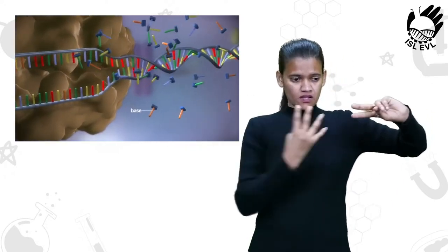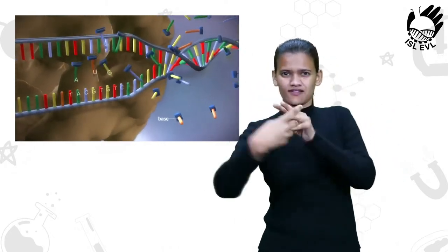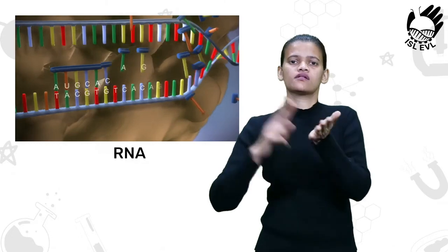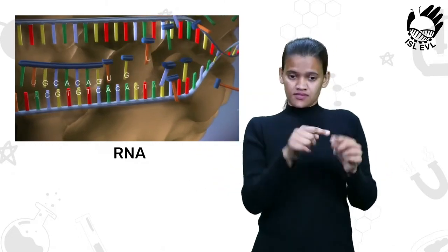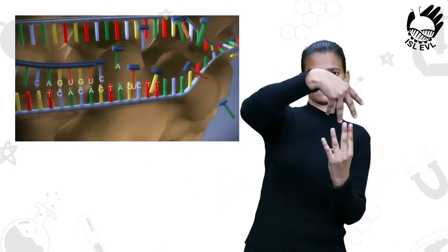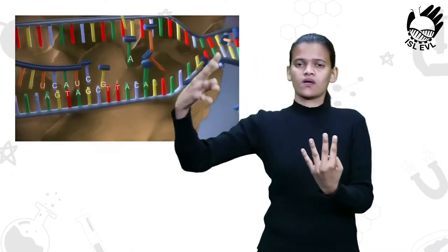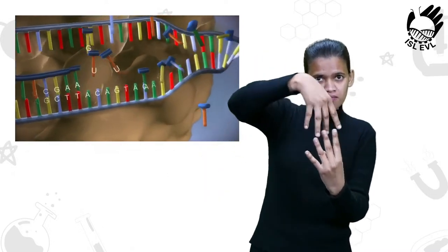When a gene is switched on, an enzyme called RNA polymerase attaches to the start of the gene. It moves along the DNA making a strand of messenger RNA.